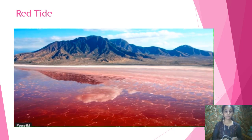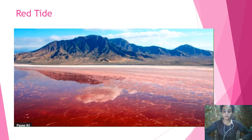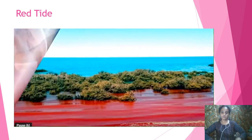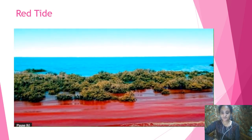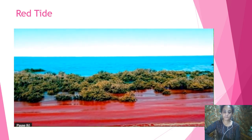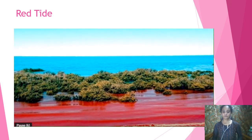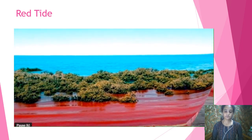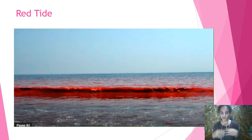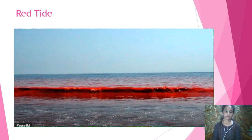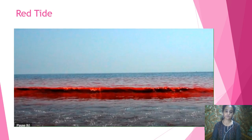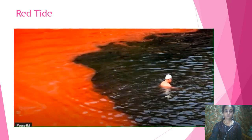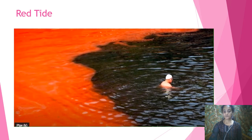A red tide is the rapid accumulation of aquatic algae made up of mobile single-celled microorganisms known as dinoflagellates — meaning 'whirling whip' due to tail-like projections that propel them through water. Certain phytoplankton release harmful substances, and some dinoflagellates produce toxins that concentrate inside creatures feeding on them.